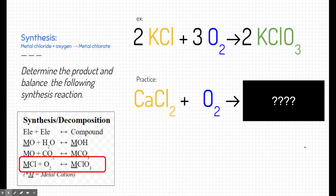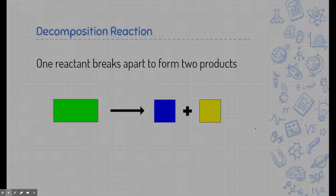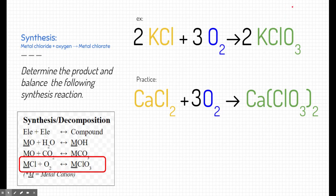The last type of synthesis reaction is a metal chloride and oxygen combining to form a metal chlorate. Here's an example: potassium chloride and oxygen — oxygen being diatomic — combine to form potassium chlorate. For the practice problem, calcium chloride and oxygen combine to form calcium chlorate, written based on charges. To balance this reaction, we need to add a coefficient of 3 in front of oxygen in the reactants.